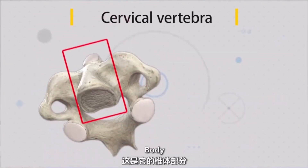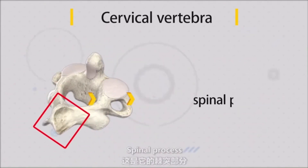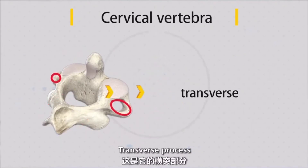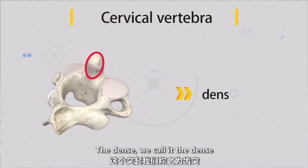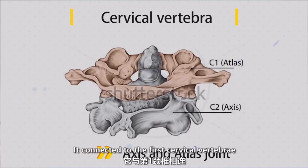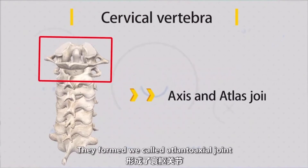The axis has the body, the spinous process, and the transverse process. And we have the dens. The dens connects to the first cervical vertebra — the atlas — to form the atlas-axis joint.